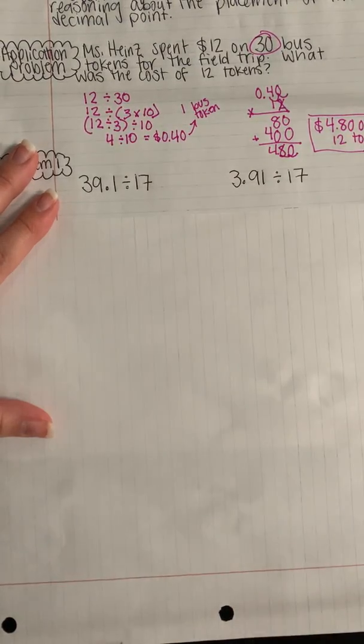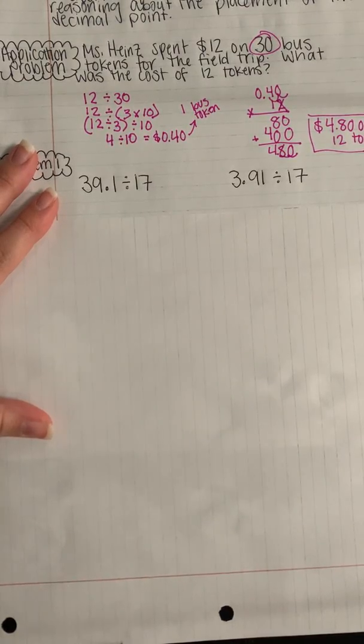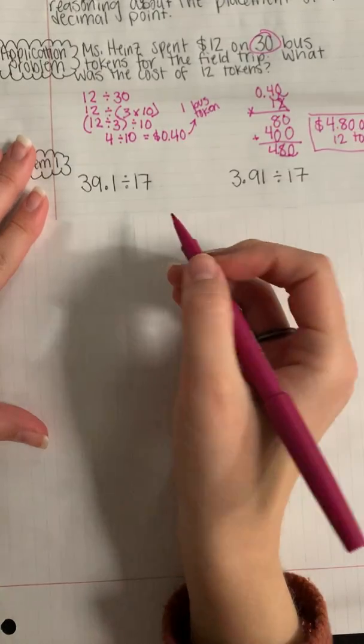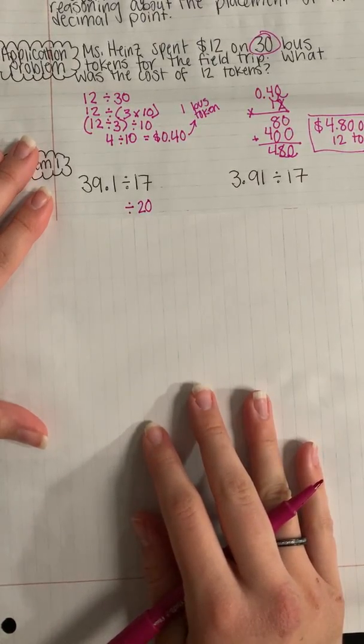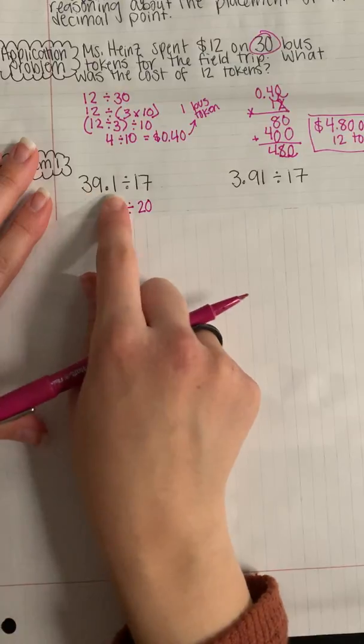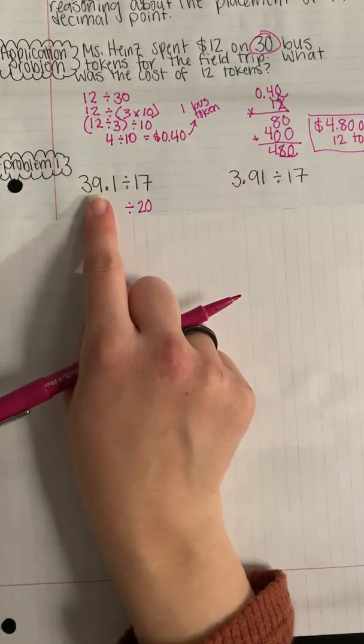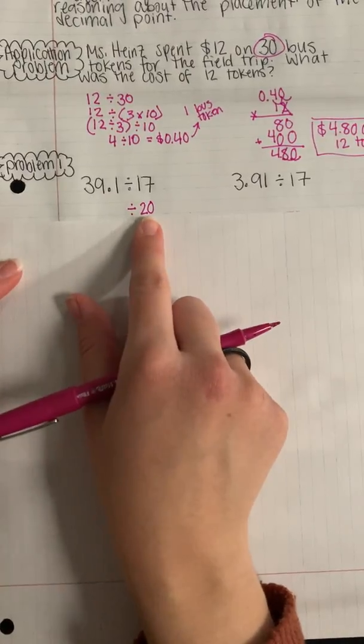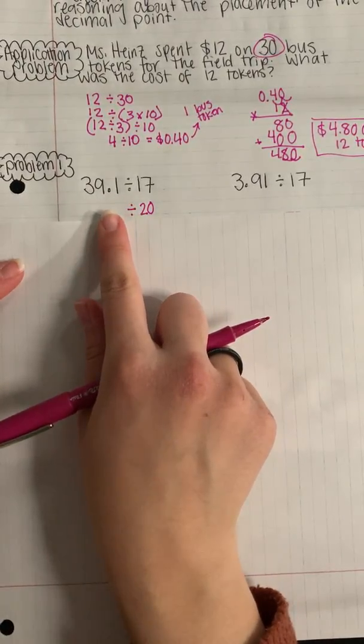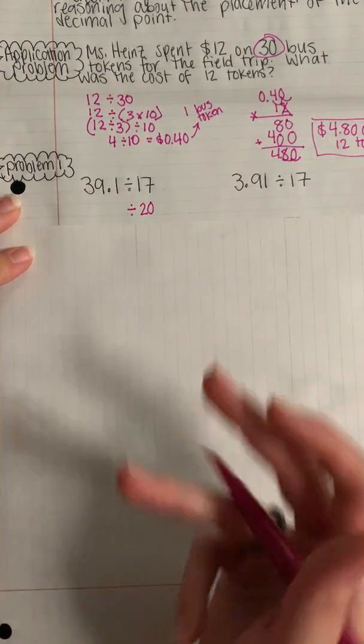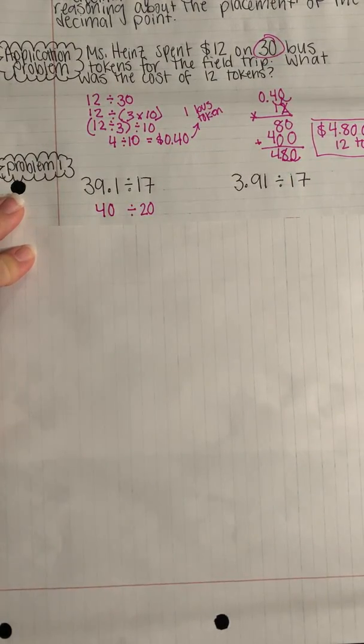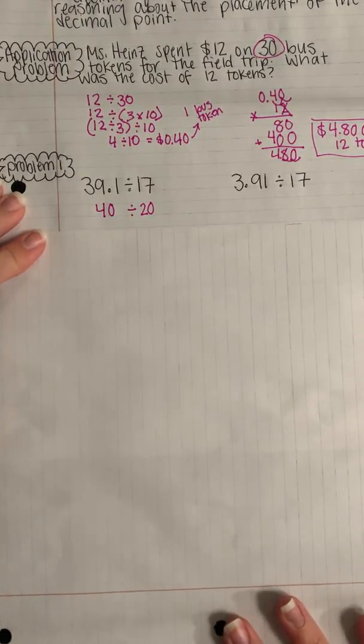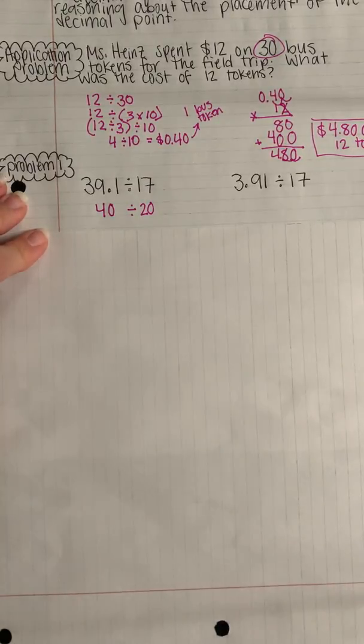So just as we did before, we will round the divisor first. So what is 17 rounded to the nearest 10? That would be 20. We recorded our estimation and now we need to round our whole that we're starting with, 39.1, to a number that can easily be divided by 20. We could round 39.1 to 40. 40 divided by 20 is much easier to divide than what we initially started with.